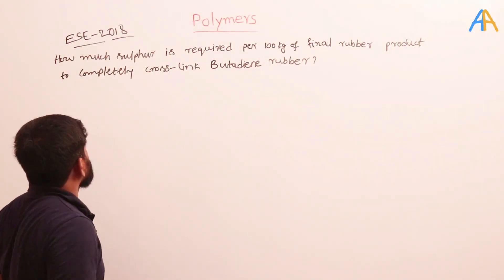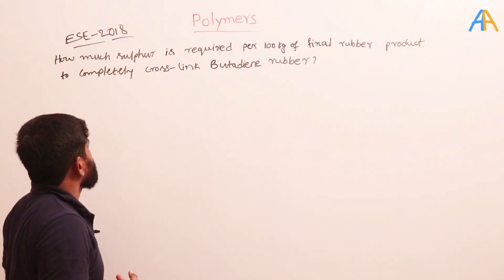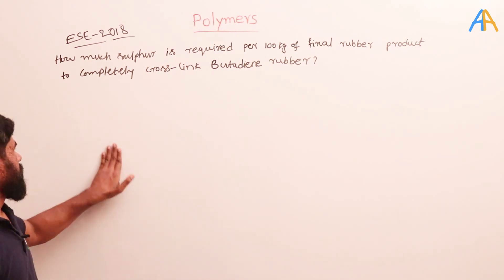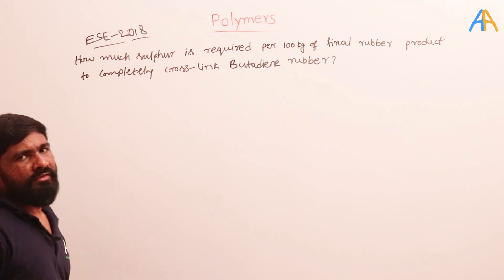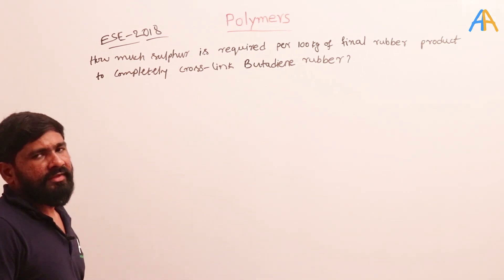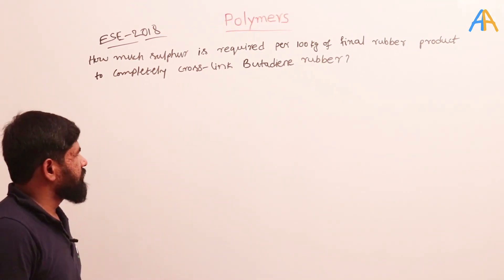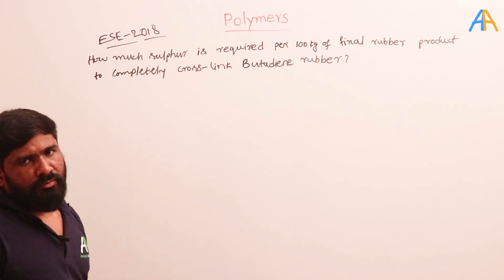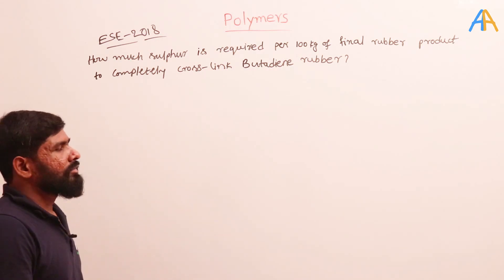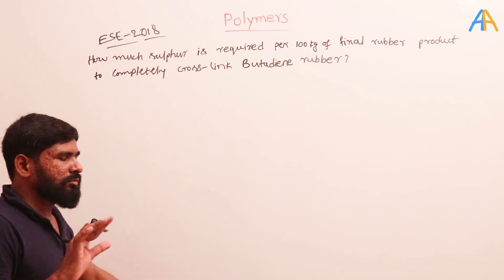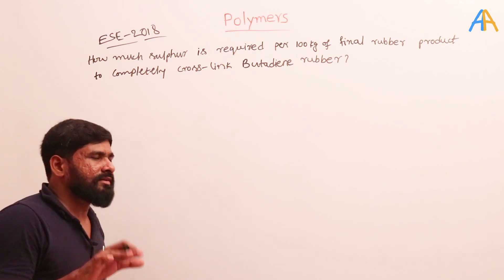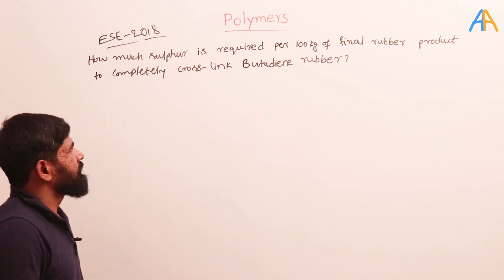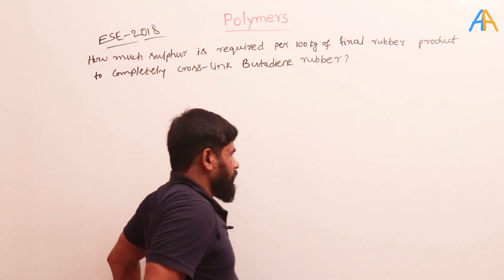Now we will see some numericals on vulcanization. Without knowing the vulcanization and the structure of the rubber mentioned, we are unable to solve this problem. That is why we are emphasizing again and again — we need to remember some of the basic structures. So, how much sulfur is required for 100 kg of the final product?